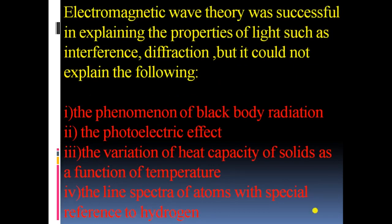Electromagnetic Wave Theory was successful in explaining many phenomena like interference and diffraction, but it could not explain the following phenomena: 1. Blackbody Radiation, 2. Photoelectric Effect, 3. Variation of Heat Capacity of Solids as a Function of Temperature, 4. Line Spectra of Atoms with Special Reference to Hydrogen.